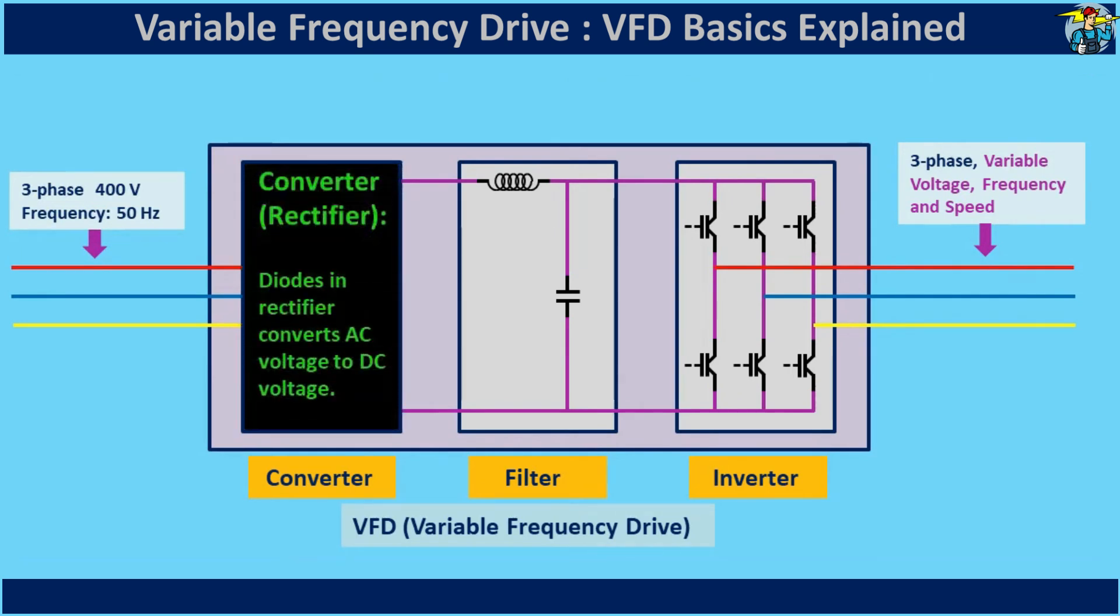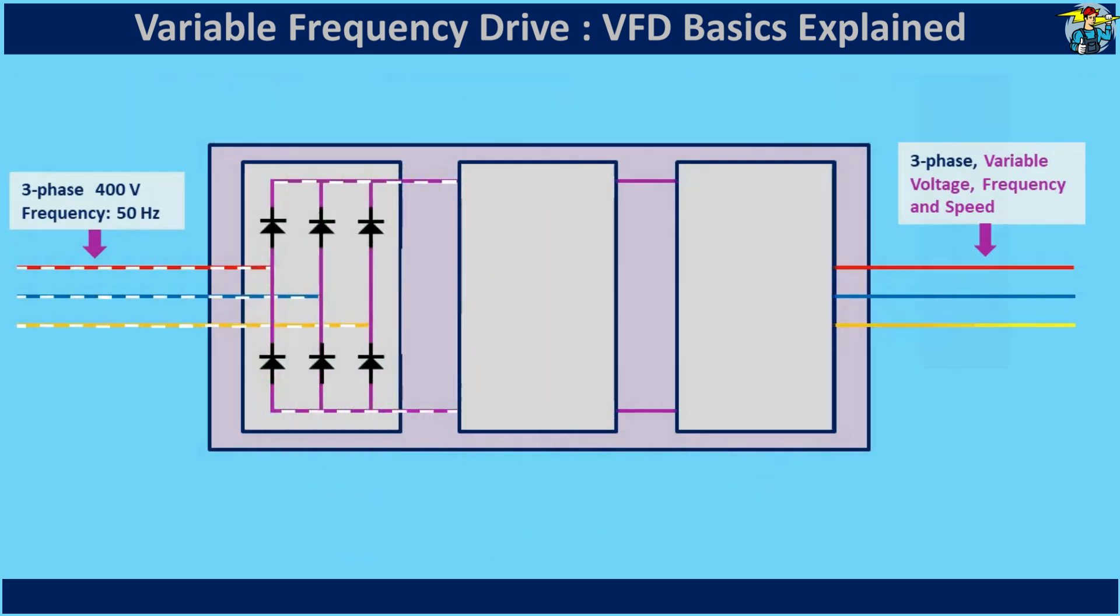The converter, also called a rectifier, is equipped with a set of diodes. This rectifier allows current to flow in only one direction, converting alternating current to direct current.